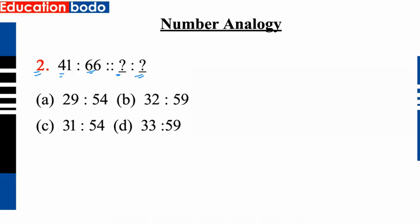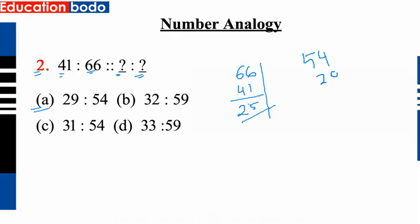Option A is 29, 54. Option B is 32, 59. Option C is 31, 54. Option D is 33, 59. Okay, direct 66. Now 66, then 41. Okay, 41 minus column — 25. Okay, 25. And 25 minus 66 — then 41. The option is correct.